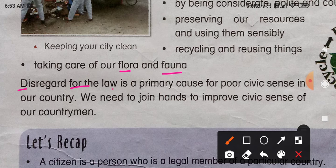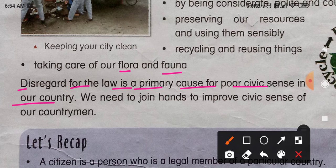Disregard for law is the primary cause of poor civic sense in our country. Disregard means disrespect — agar aap apne desh ke law ka samman nahi karte, if you don't respect the law provided by the constitution and Supreme Court, it causes poor civic sense. What do we do? We respect our law — regard to our law — we do not want to disregard it.